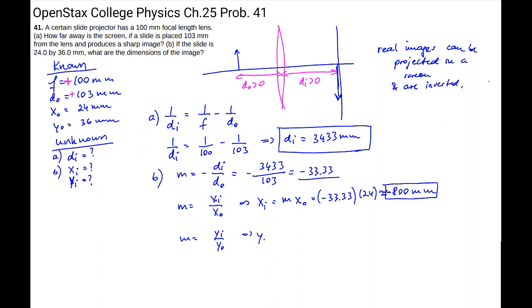Then the y i is going to be m y o. Magnification again is negative 33.33. y is 36. So when we multiply those together, we get about 1200 millimeters. And that also is negative.